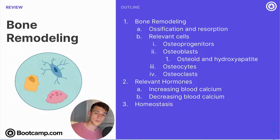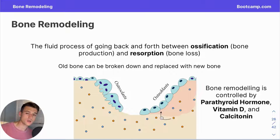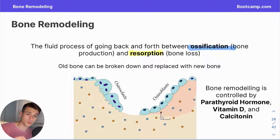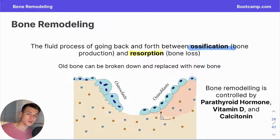Welcome to today's video on the processes of bone remodeling. Bone exists in a constant tug of war between the production of new bone and the breakdown of old bone. The production of new bone is referred to as ossification, and the breakdown of older bone is known as resorption, which we can also think of as bone loss. There are several reasons why bone production or resorption could happen at any given time. Bone cells have a lifetime — they get older, die, and need replacing. There is also a blood calcium balance that needs maintaining.